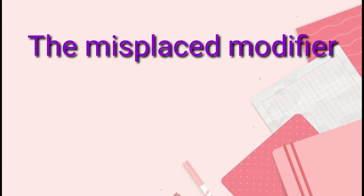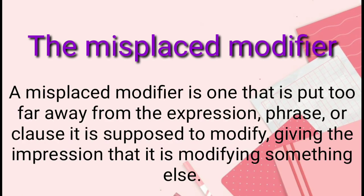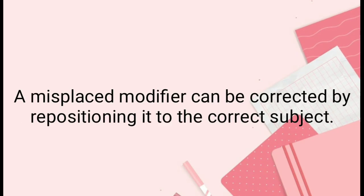What is a misplaced modifier? A misplaced modifier is one that is put too far away from the expression, phrase, or clause it is supposed to modify, giving the impression that it is modifying something else. A misplaced modifier can be corrected by repositioning it to the correct subject.